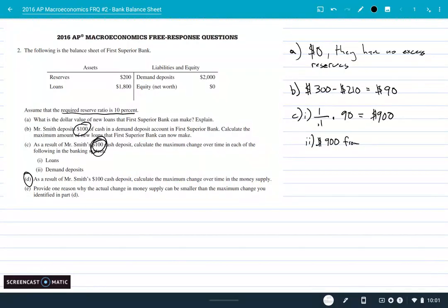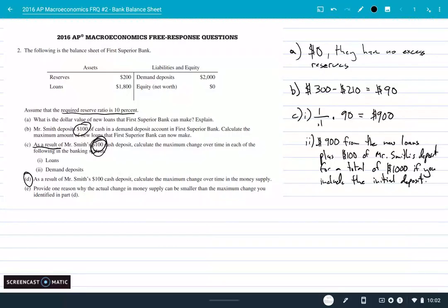So I would say - I'm not always certain what they're asking for in a free response - I can say $900 from the new loans plus $100 of Mr. Smith's deposit for a total of $1,000 if you include the initial deposit. I'm a little unsure when they ask this question because they're saying as a result of that deposit, so are they talking about including that deposit or all the deposits that happen after that? I think I would probably just play it on the safe side. You can in a free response - that is way more words than I want to write - but I want to make sure I get credit there and it is a little unclear in the wording.